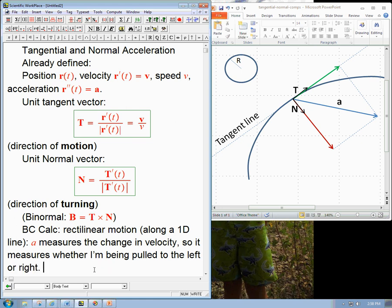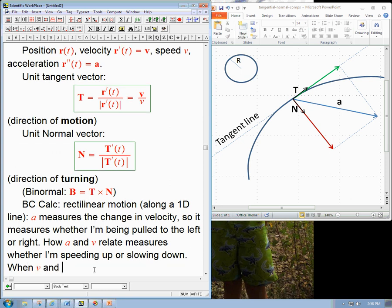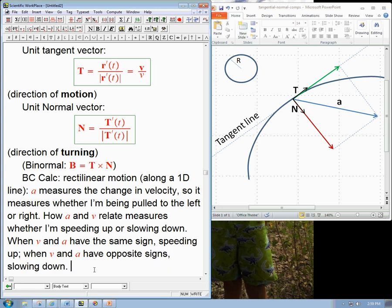Okay, but there was a subtler thing, which was how a and v relate measures whether I'm speeding up or slowing down. I have a video about that. And the punchline of that is that when v and a have the same sign, we're speeding up. And when v and a have opposite signs, we're slowing down.